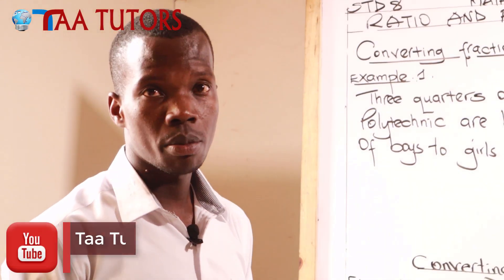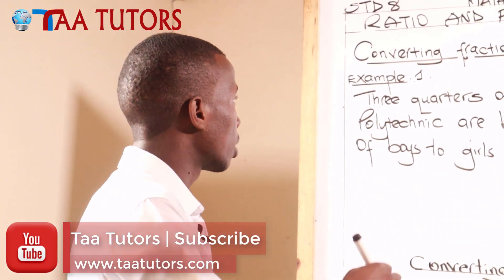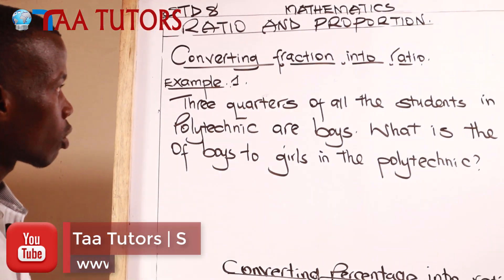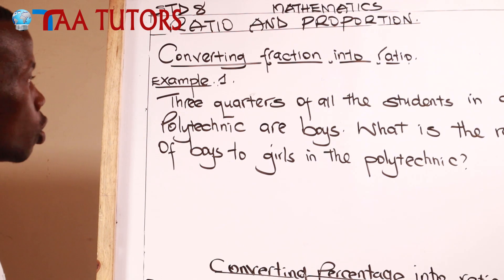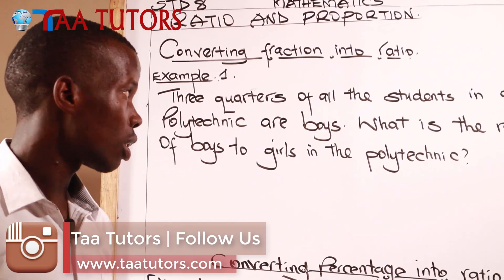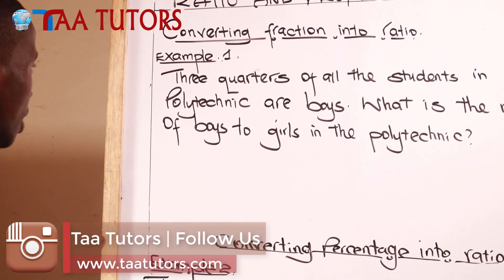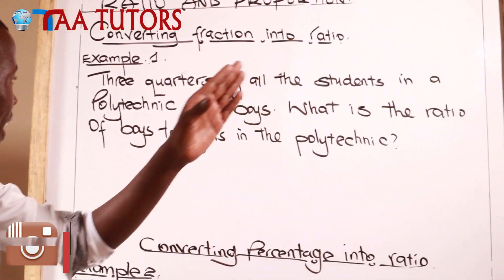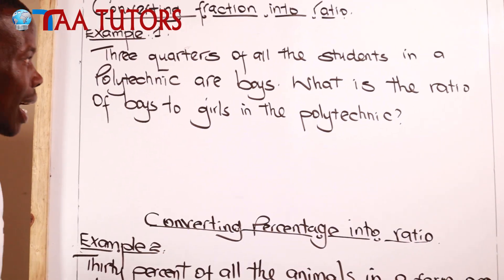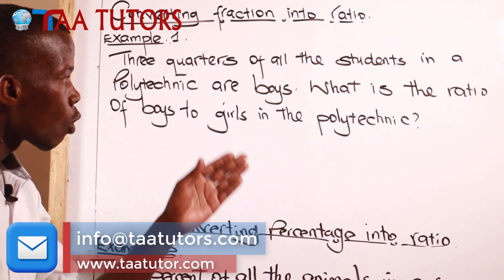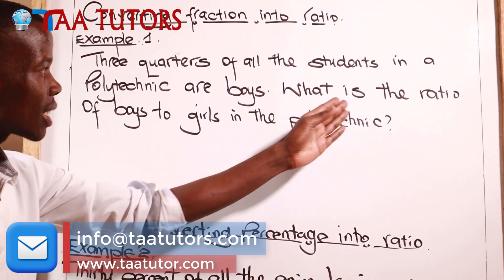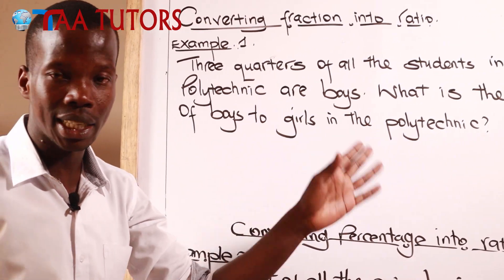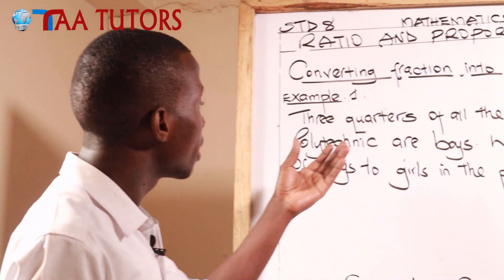Let's look at our first example. It is very important that before you do maths, you read the question and understand it. Three quarters of all the students in a polytechnic are boys. What is the ratio of boys to girls in the polytechnic?